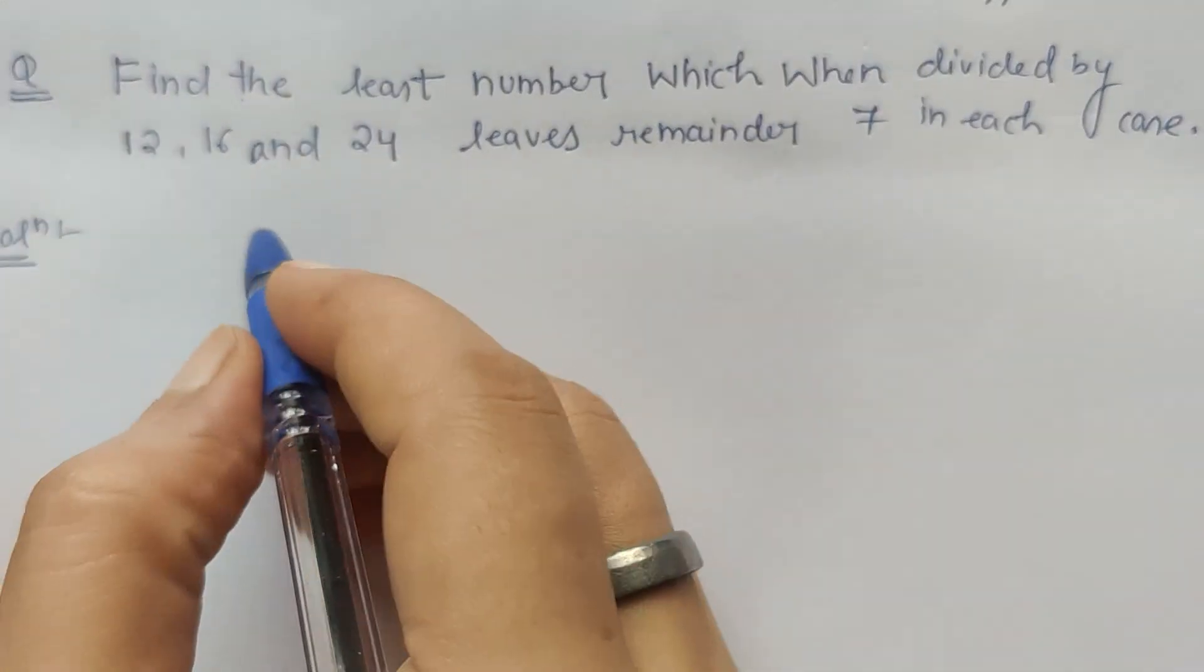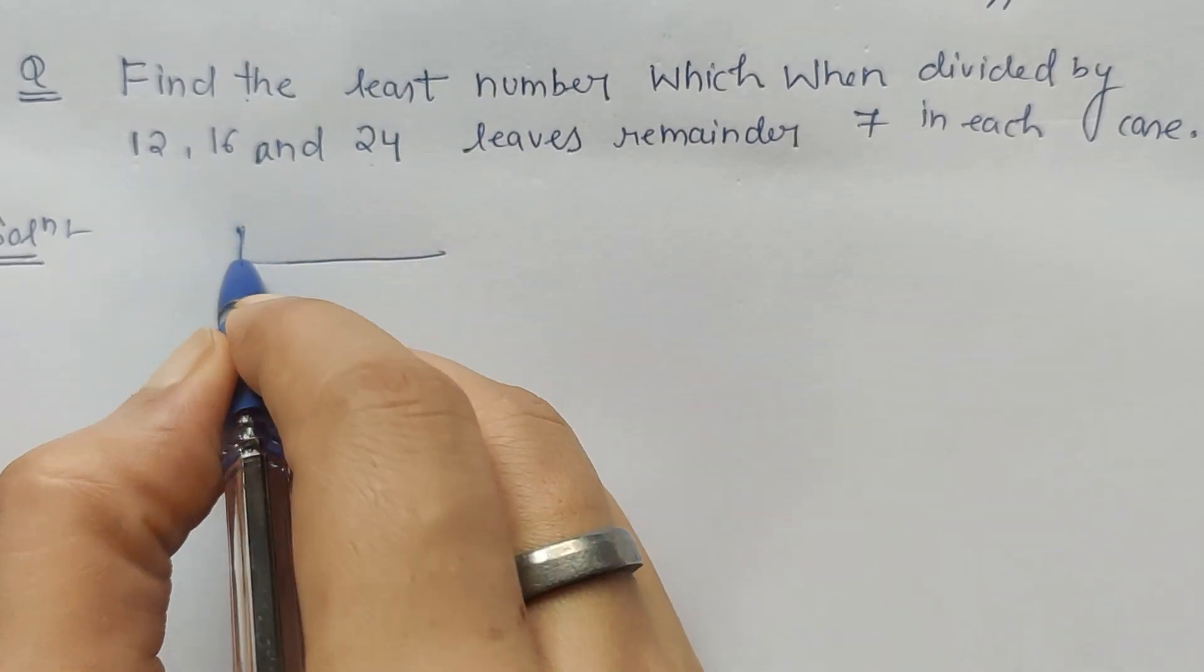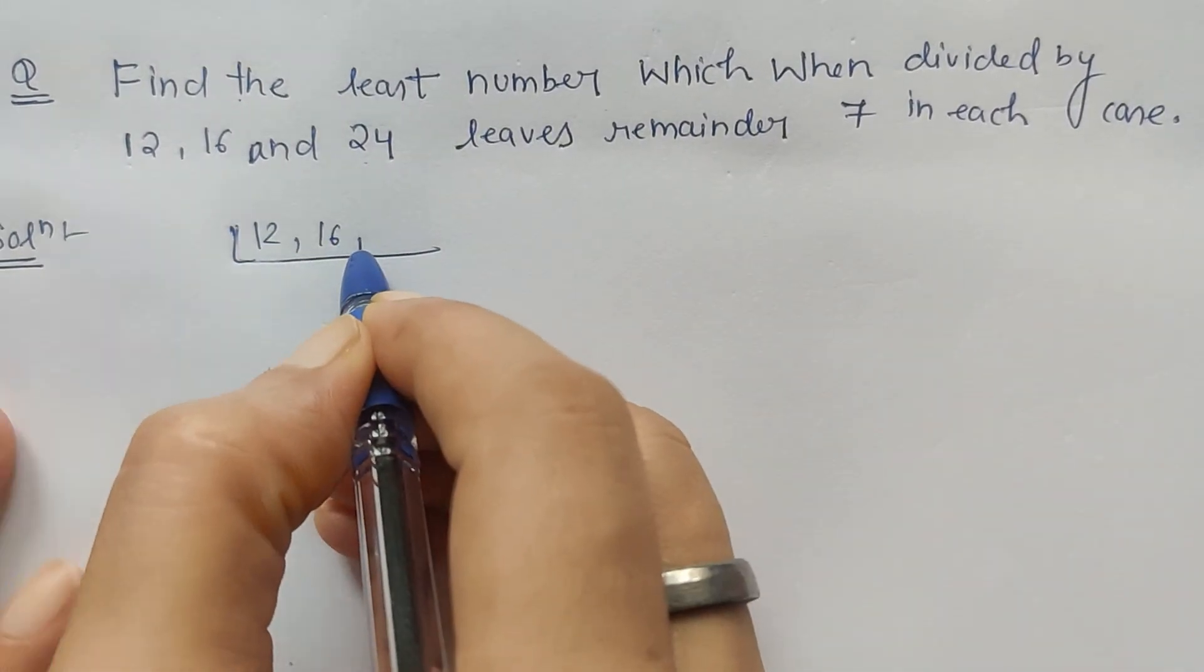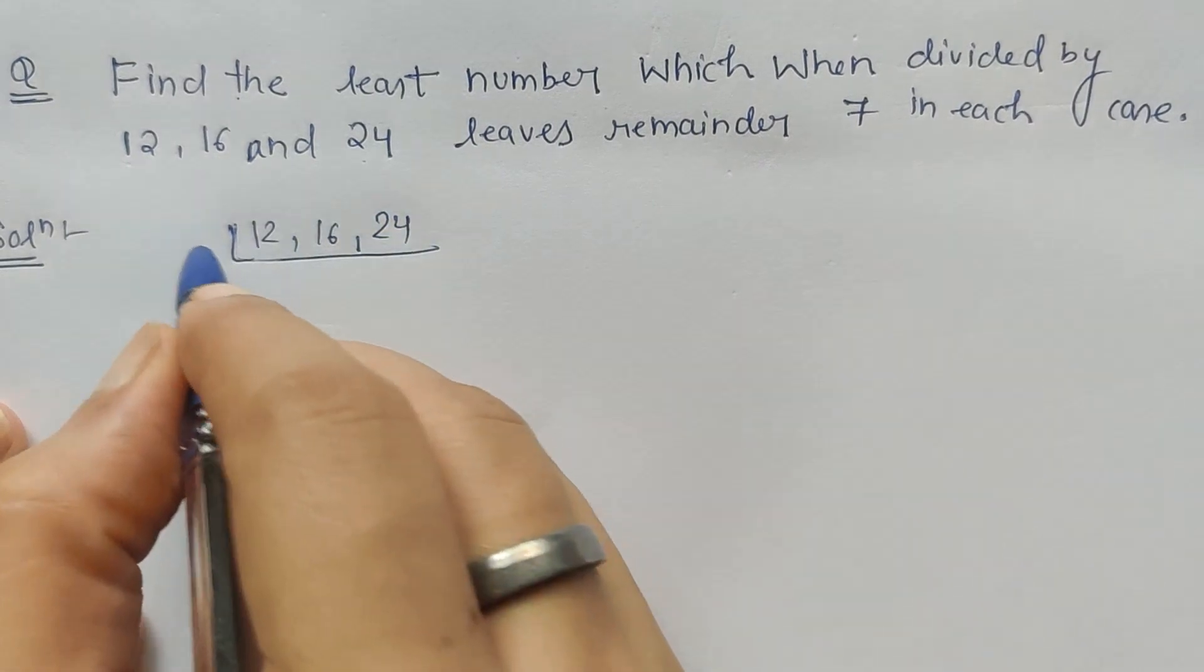We have to find the LCM of the given numbers. So when we find the LCM of 12, 16, and 24, what do we get?